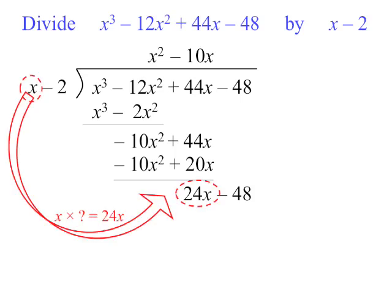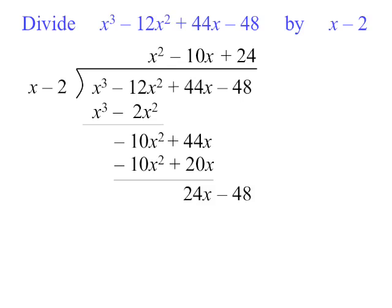Now we need to think something multiplied by x gives us 24x. So that's obviously 24. And you need to write that above the line in the constant column. As soon as we've written something above the line, you need to multiply the linear factor by that and write it underneath.